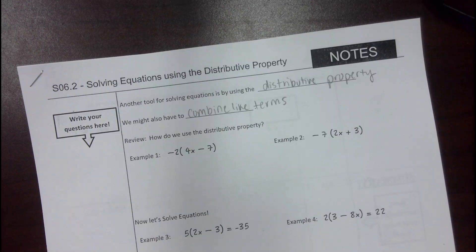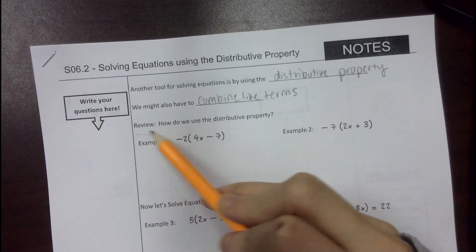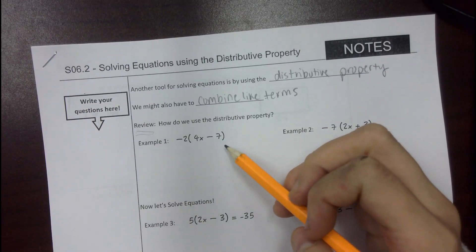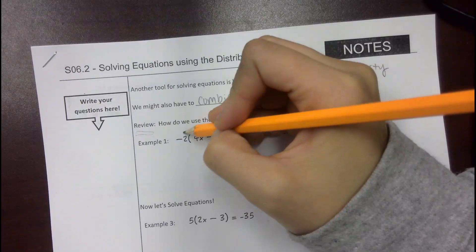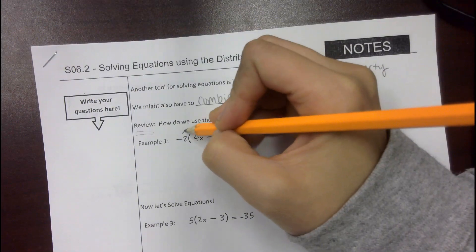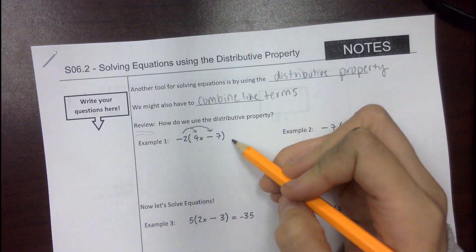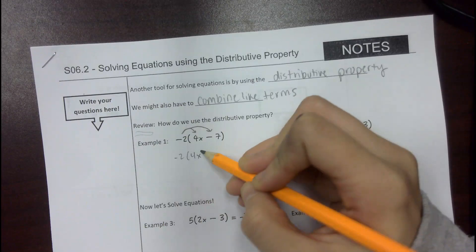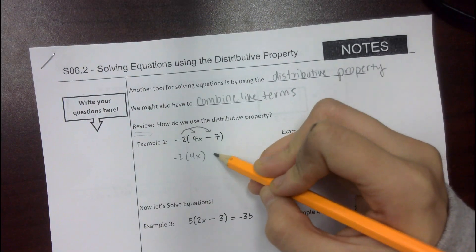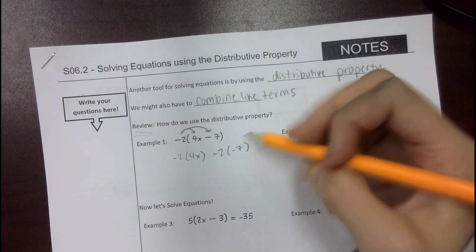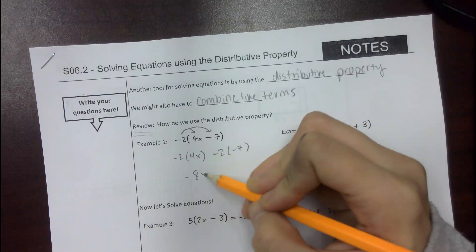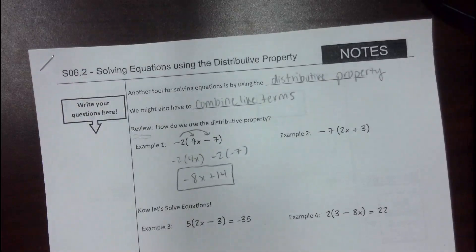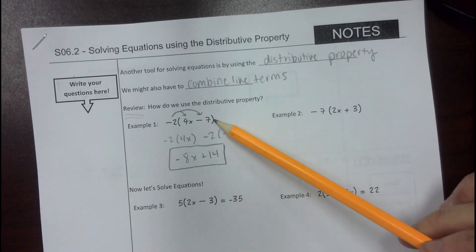Let's review the distributive property — this is a review. If you see a number right next to a parentheses, that means you are multiplying. Whatever number is in front, I like to draw arrows, and you're multiplying it by both terms. So we have negative 2 times 4x, and then negative 2 times negative 7. That turns into negative 8x plus 14. Don't forget: a negative times a negative is a positive.